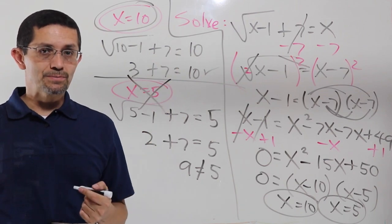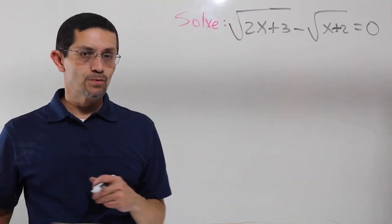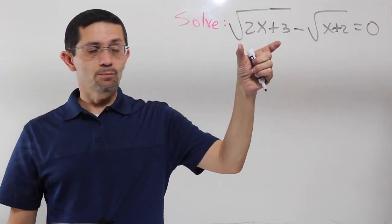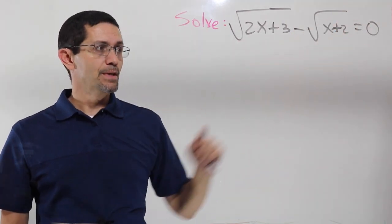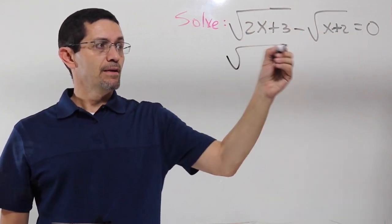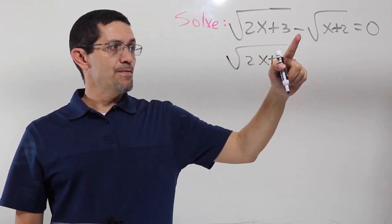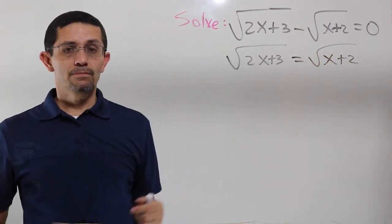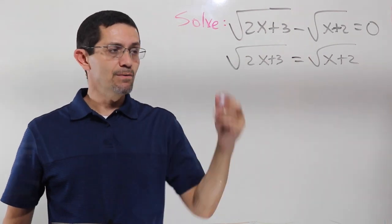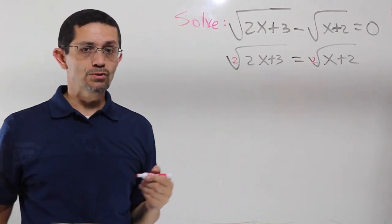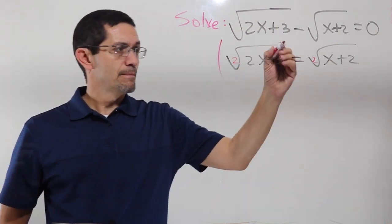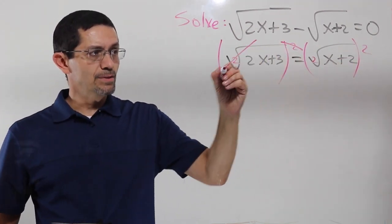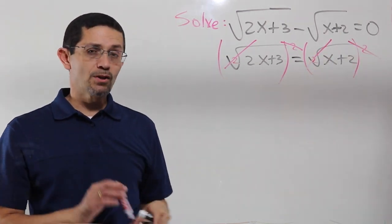Make sure you always double check your answers. Now I have two radicals. Believe it or not, this is an easy one. The idea is always to leave the radical by itself. Let's leave this radical by itself and move the other one to the other side. If it's negative, it goes positive on the other side. So I have square root of 2x plus 3 equals square root of x plus 2. They don't have an index meaning they have a little 2 — they're square roots. To cancel them, raise to the second power. That square cancels this radical and that square cancels that radical, so both radicals cancel.